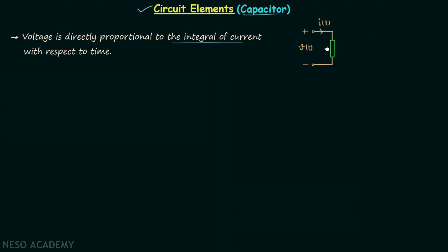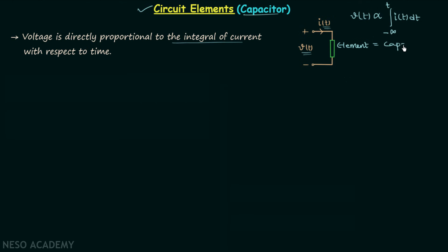Here we have a black box representing one element, where the voltage across the element is V(t) and the current through the element is I(t). Now if voltage V(t) is proportional to the integration from minus infinity to t of I(t) dt, we say the element we are having is a capacitor.